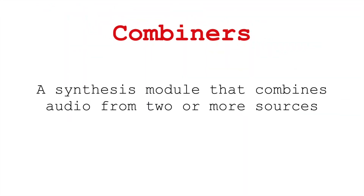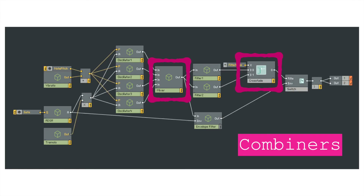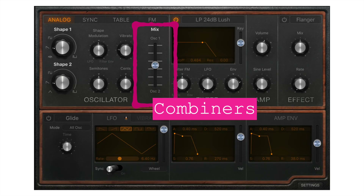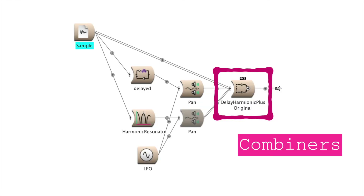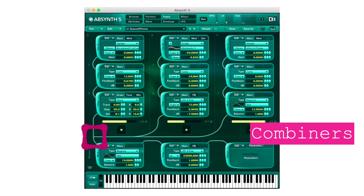Next, combiners. Combiners take in multiple audio signals and combine them into one — a mixer, a crossfade, etc. Most synthesizers are using multiple generators at some point, and we need to combine the signal from those generators together to the output.